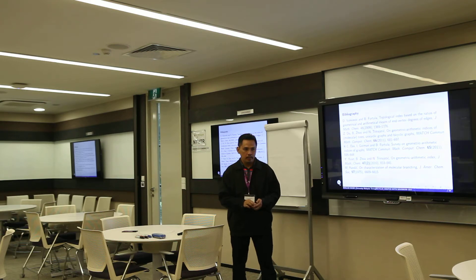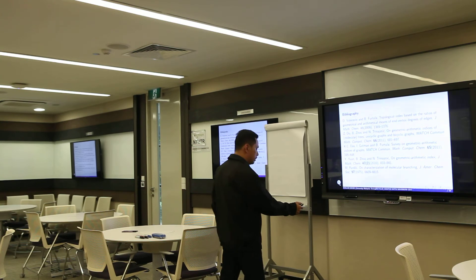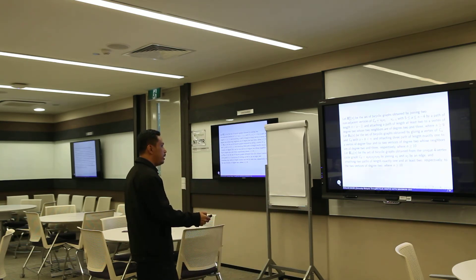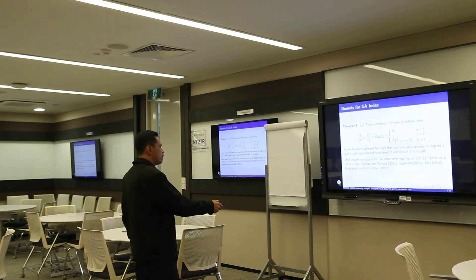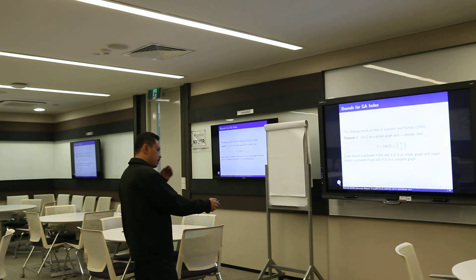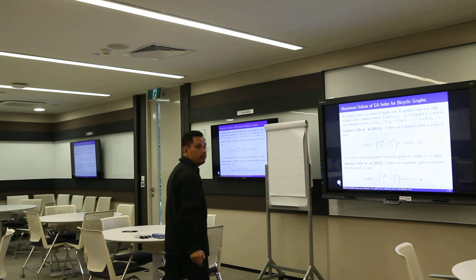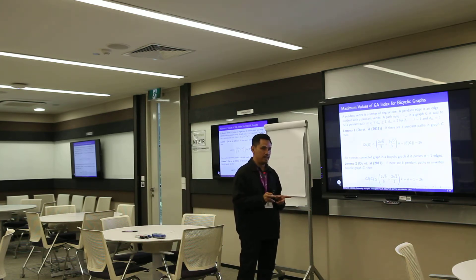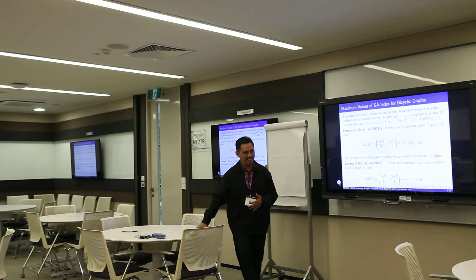A question was raised: what is a bicyclic graph? A bicyclic graph is a connected graph with n+1 edges — so it has two independent cycles. In fact, the general form could contain up to three cycles.